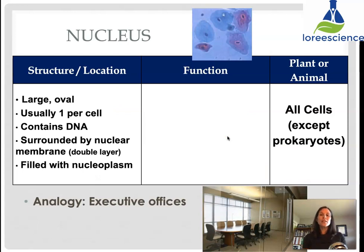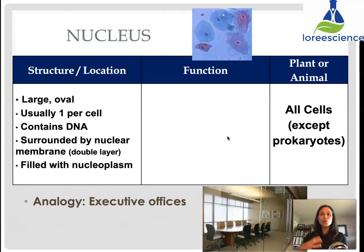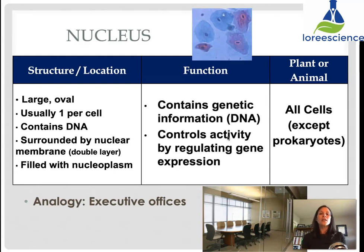The nucleus is generally large and oval-shaped. Most cells have one nucleus, though some have none and some have more than one. It contains the cell's DNA and is surrounded by its own protective layer known as the nuclear membrane — actually a double layer, because the DNA needs to be highly protected. It is filled with nucleoplasm, which has a similar structure to cytoplasm but is found inside the nucleus. The function of the nucleus is to contain and protect all genetic information, known as DNA — deoxyribonucleic acid — and to control the activities of the cell by regulating which genes or portions of DNA are expressed at any given time.